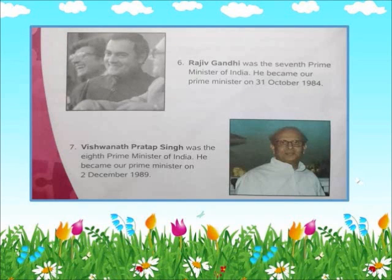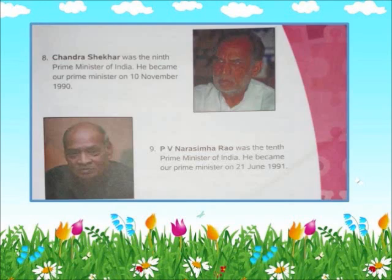Rajiv Gandhi was the seventh Prime Minister of India. He became our Prime Minister on 31st October 1984. Vishwanath Pratap Singh was the eighth Prime Minister of India. He became our Prime Minister on 2nd December 1989. Chandrasekhar was the ninth Prime Minister of India. He became our Prime Minister on 10th November 1990.